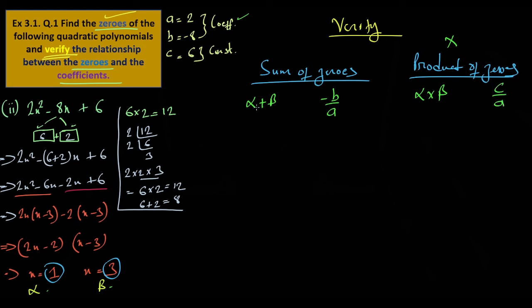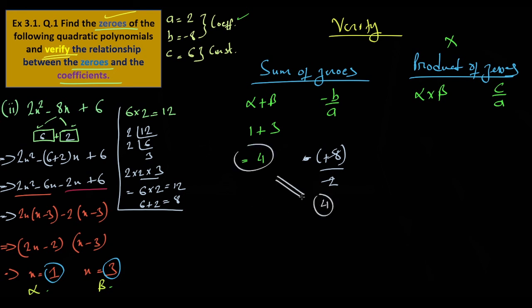Replace: alpha plus beta. Alpha is 1, so 1 plus 3 equals 4. And minus b by a: minus of negative 8 over 2 equals plus 8 over 2 equals 4. The sum of zeros is verified: both sides equal 4.